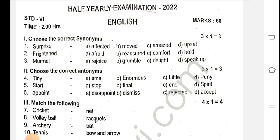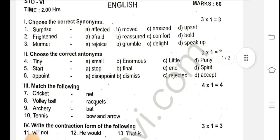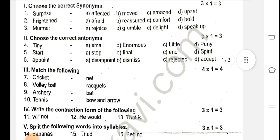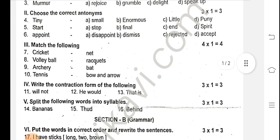First, choose the correct synonyms. Three words: Surprise, Frightened, Murmur. You can write the meaning. The second row, one and two or another — the text is written. You can write the third row.